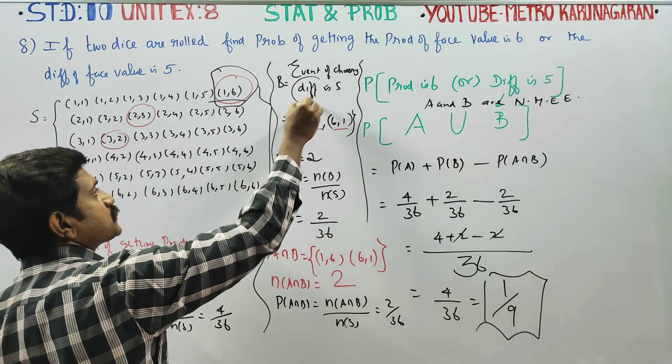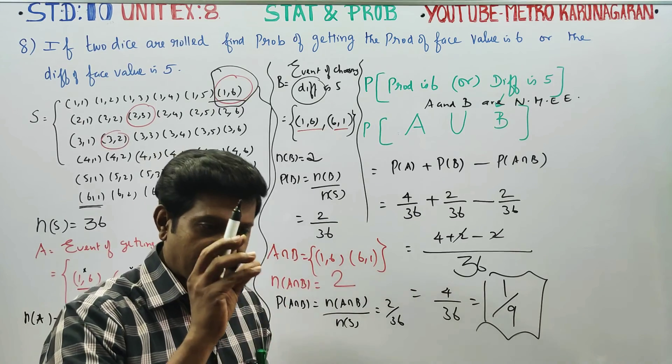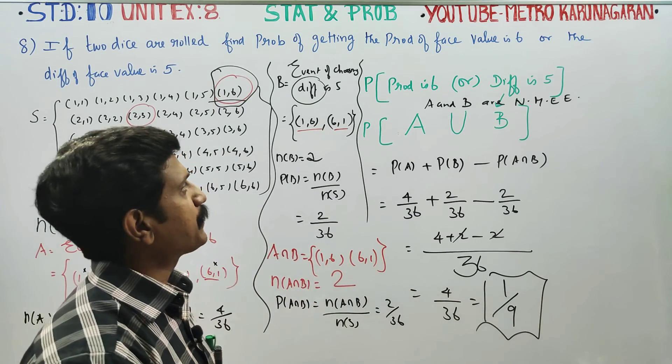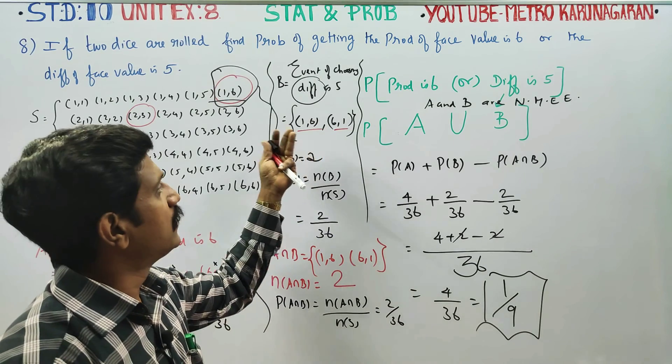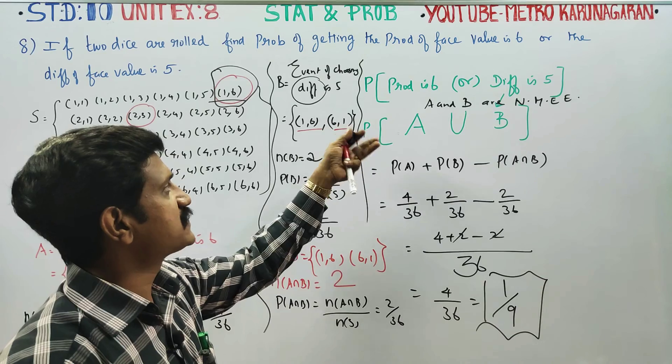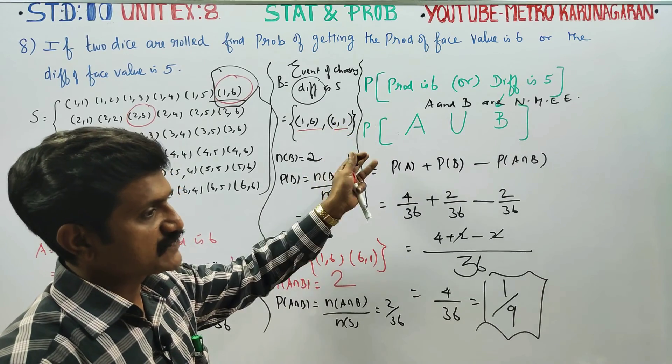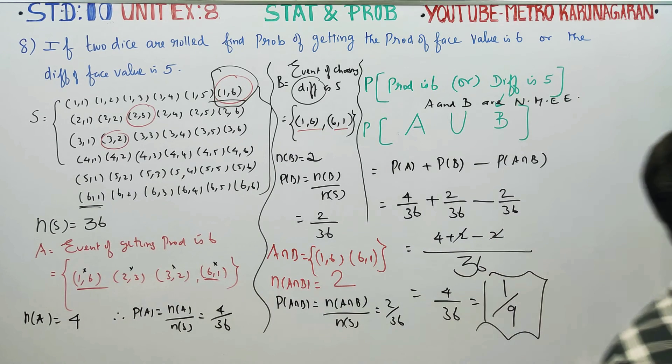Now about difference - difference means modulus value. 1 minus 6 equals negative 5, but modulus is positive 5. 6 minus 1 is positive 5. That means (1,6) and (6,1) both give difference of 5. If you subscribe to the channel, there will be a chance for you. Thank you.